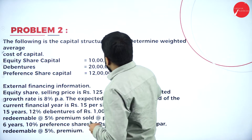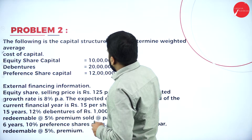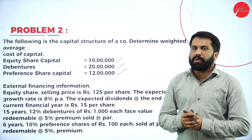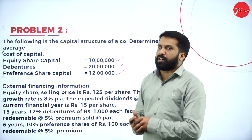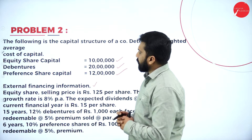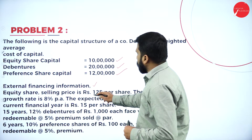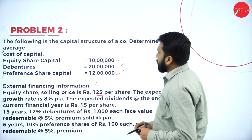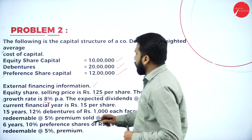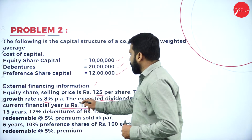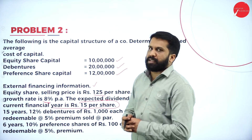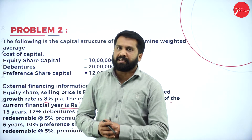We have equity shares of 10 lakh, debentures of 20 lakh, and preference shares of 12 lakh. You know how to do this because in the previous session we worked out a similar problem. Now, from the external financial information, equity shares have a selling price of 125 and an expected growth rate of 8%.